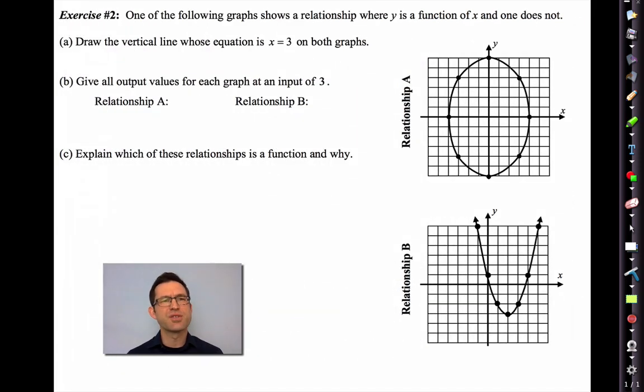Let's take a look at exercise two. Exercise two involves something very important in terms of the graphs of relationships, not functions, relationships. One of the following graphs shows a relationship where Y is a function of X and one does not. Letter A says, draw the vertical line whose equation is X equals three on both graphs. Here's X equals three on that graph. And here's X equals three on that graph.